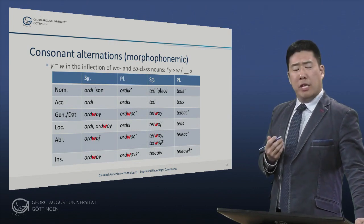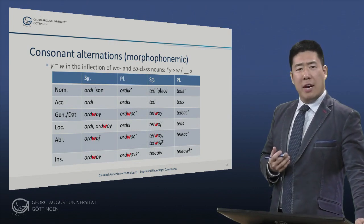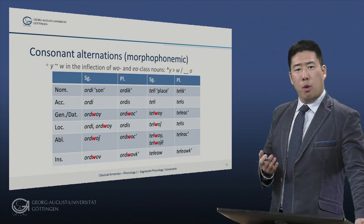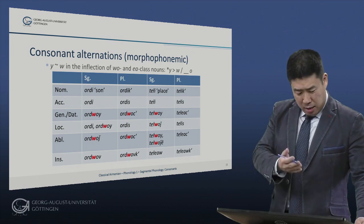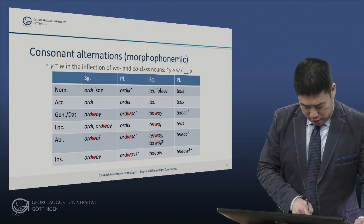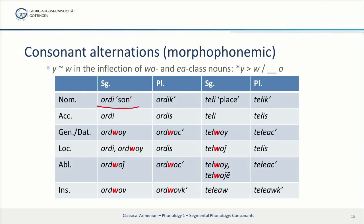Finally, we have an alternation between Y and W in the inflection of two important classes of nouns. If we look at the paradigm of 'or-di-sun', we see that this I, before vowels, should give us Y. Instead, we find the Y becoming W in all of the places where it is highlighted, before the vowel O — for example, genitive-dative 'ord-woi', genitive plural 'ord-wots'.